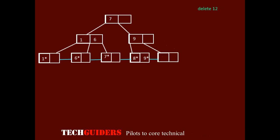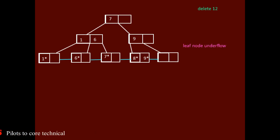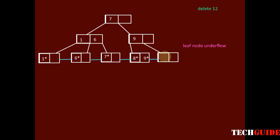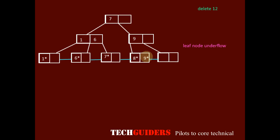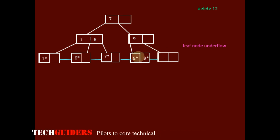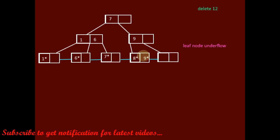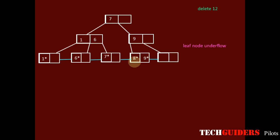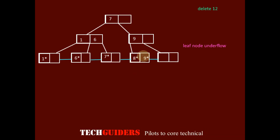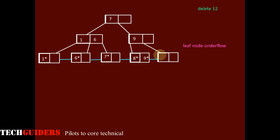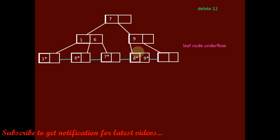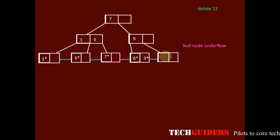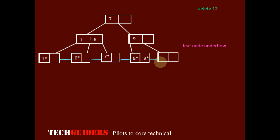Now suppose we need to delete 12. Deleting 12 will cause a leaf node underflow. The first option is key redistribution — the underflow node should try to borrow a key from its sibling. Here it has one left sibling, and this sibling has more than the minimum number of keys required. The minimum is 1, and the sibling node has two keys, so the sibling node will be able to provide a key to the underflow node.